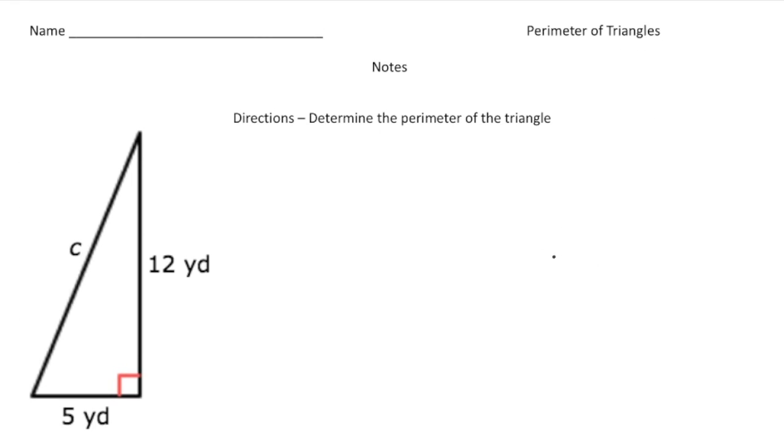So here we have a right triangle, and we want to find the perimeter. So we know that side A is 5 and side B is 12. And of course the hypotenuse is always directly across from the right angle.